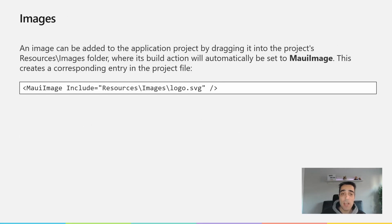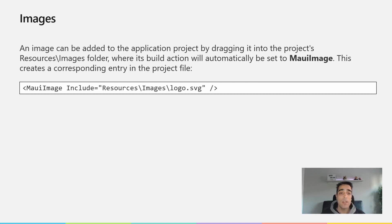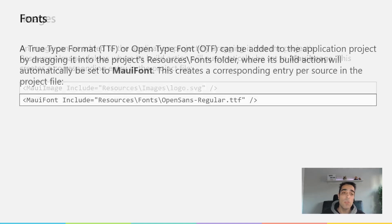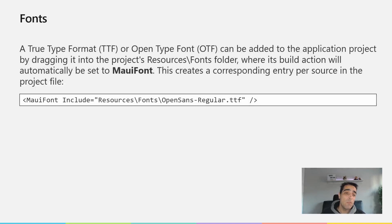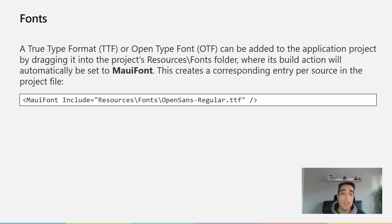Images can be added to the application project in the same way, just by dragging them into the resource images folder, where the build action will automatically be set to MauiImage. This creates the entry point in the project file with MauiImage and the path to the image. Something similar happens with fonts — TTF or OTF files can be added to the project by dragging them into the resource fonts folder, and the build action will be MauiFont, creating the correct entry in the project file.